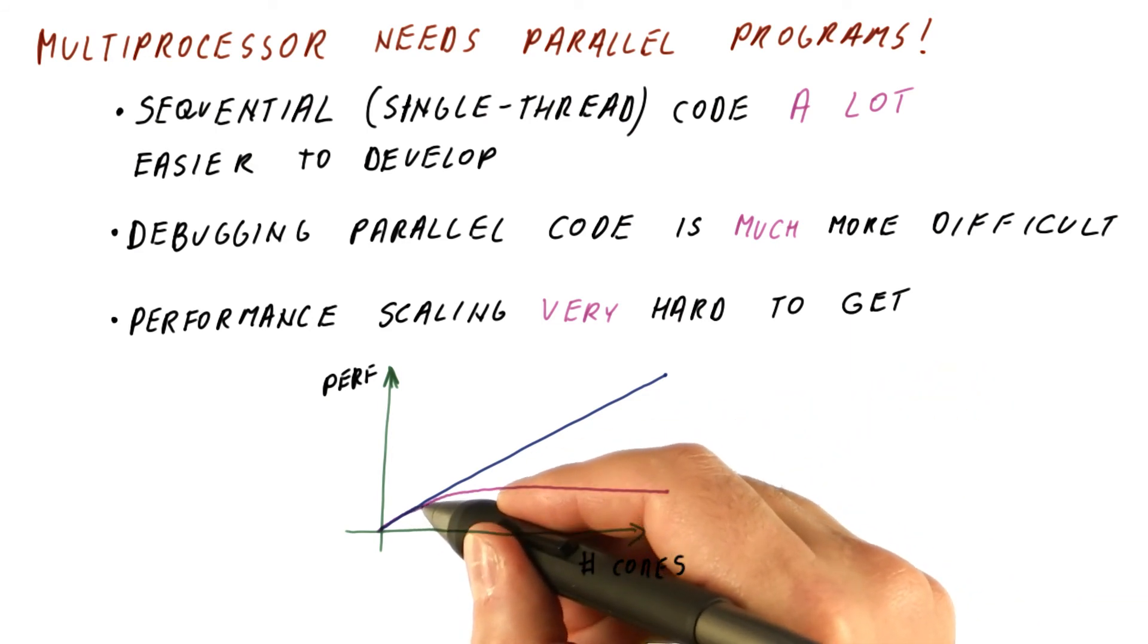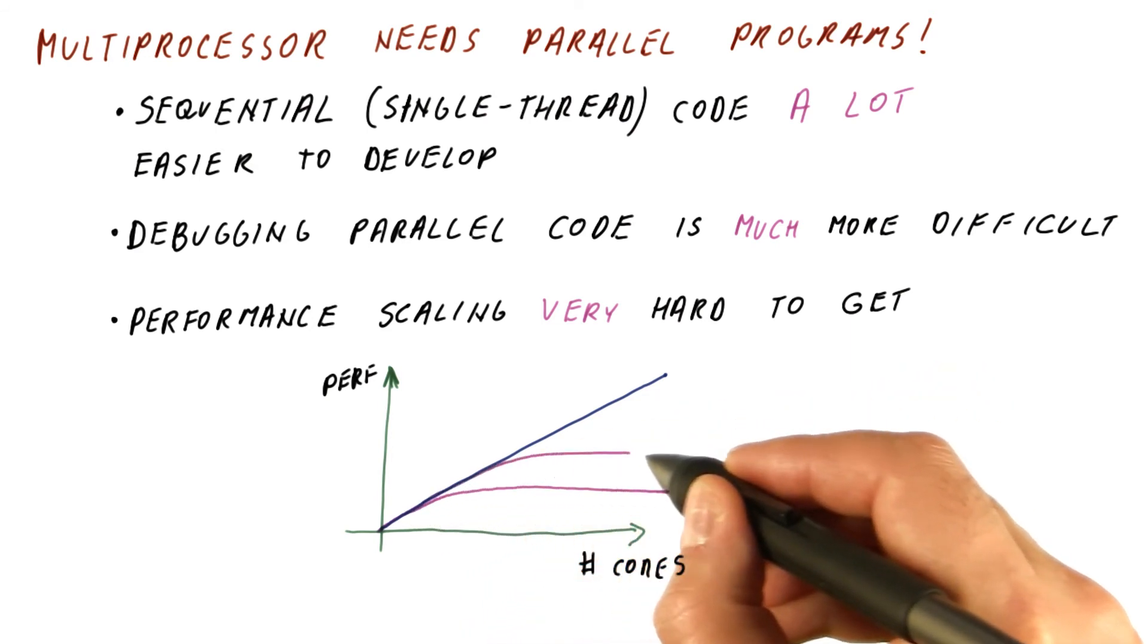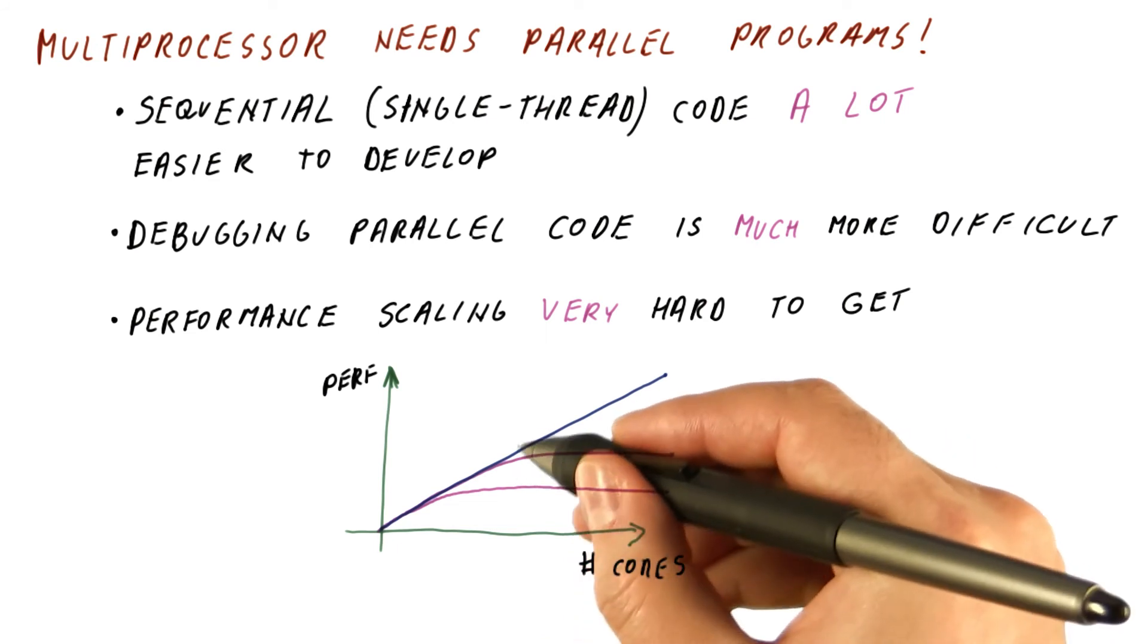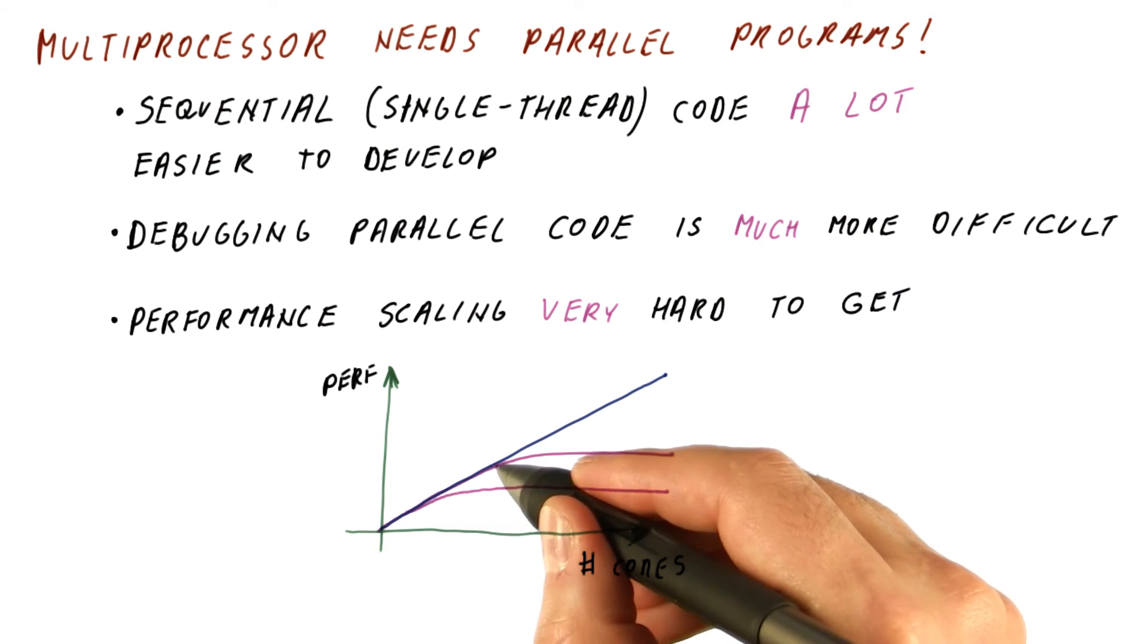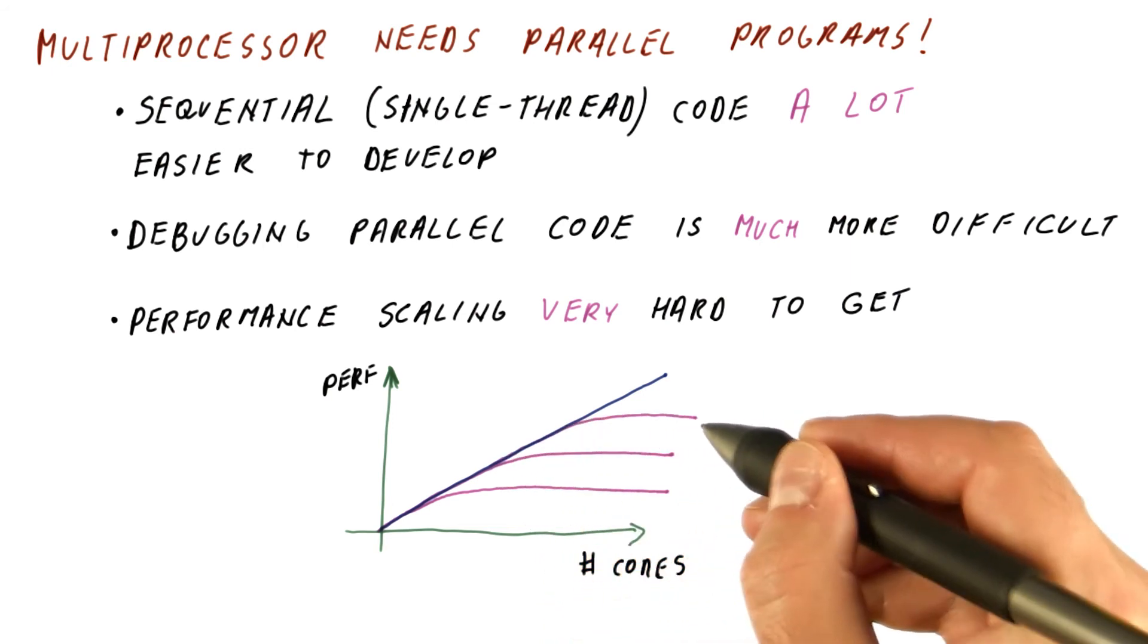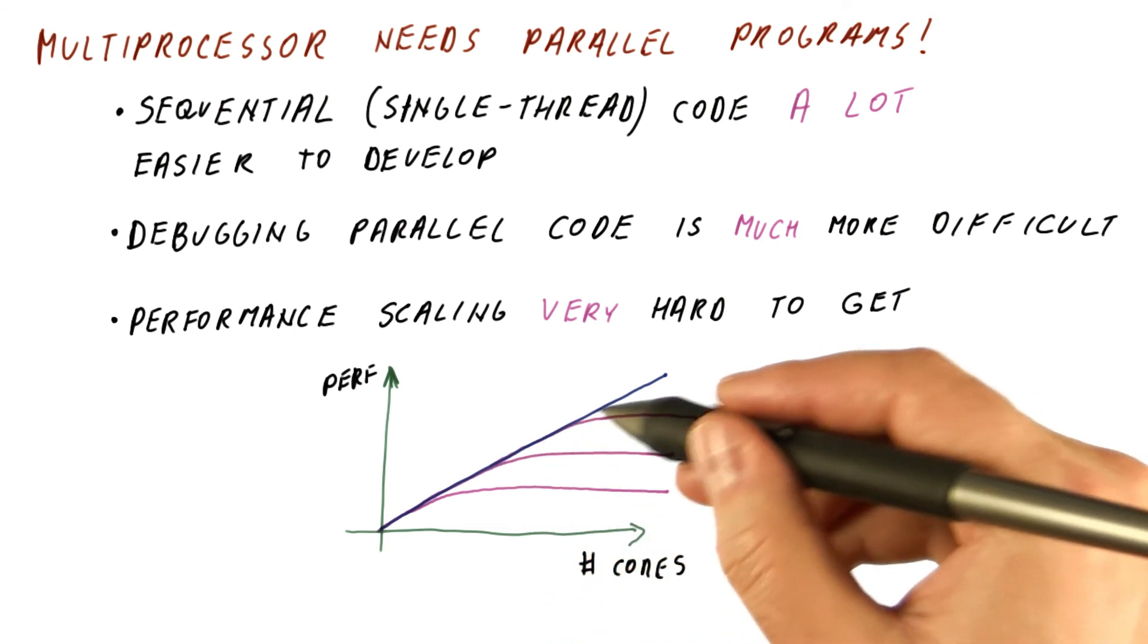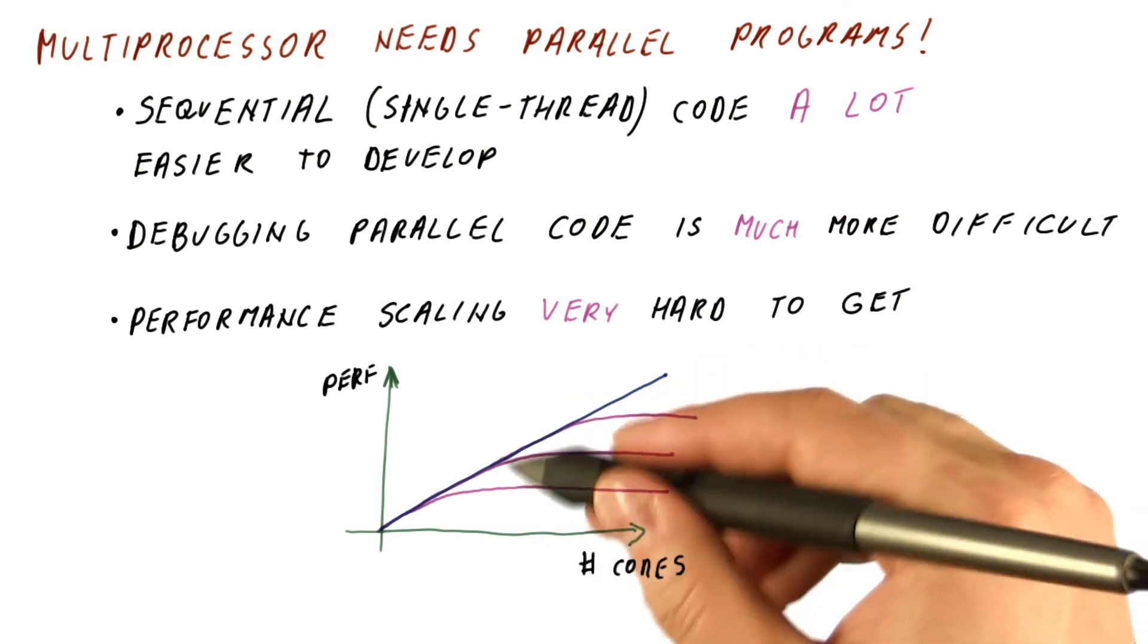You can spend a lot of time improving this program and get something like this, where it scales up to some larger number of cores reasonably well. But each of these increments in scaling is going to result in a lot of work for you to achieve it.